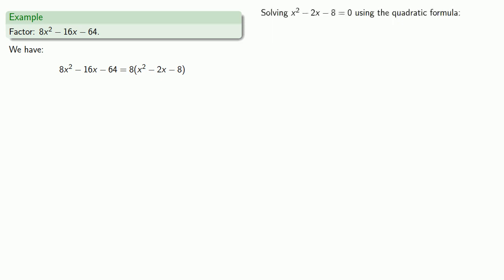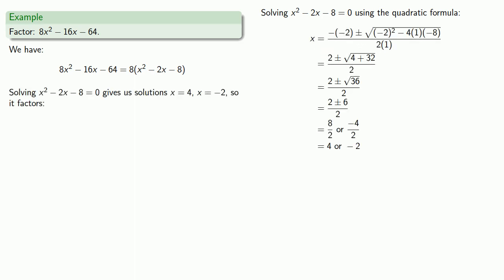Now we can try to factor x squared minus 2x minus 8 instead of our original polynomial. We'll solve x squared minus 2x minus 8 equals 0 using the quadratic formula, and we'll get our solutions 4 or negative 2, which gives us the factors x minus 4, x plus 2.